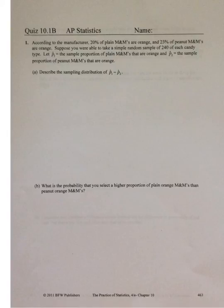Let's take a look at this problem. So 20% of plain M&Ms are orange, and 23% of peanut M&Ms are orange. We take a sample of 240 of each candy, and we're just going to call the proportion for one is plain and the proportion for two is peanut, and we'll subtract those two. So what does a sampling distribution look like?